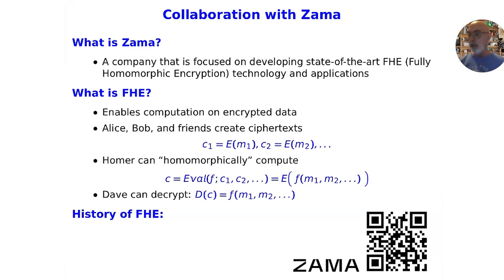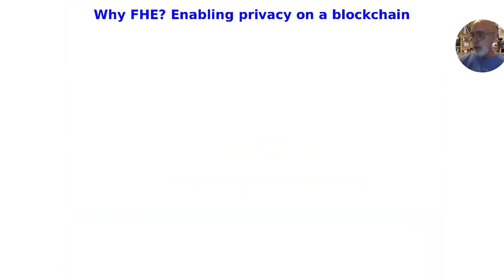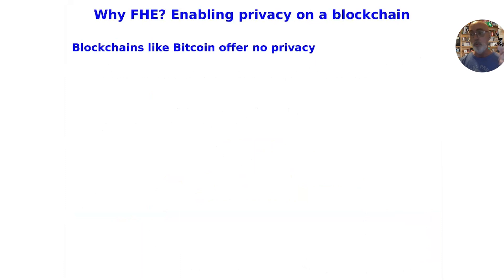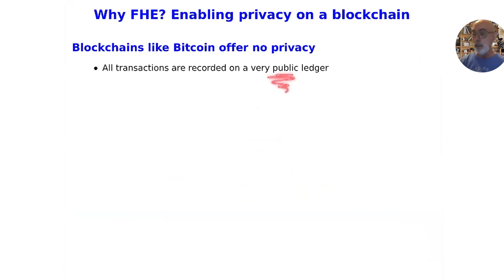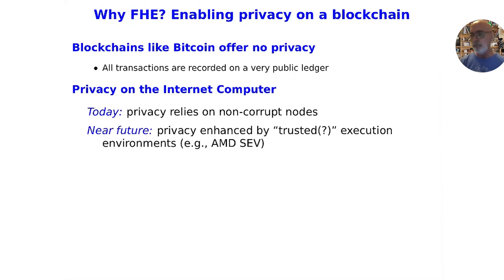FHE has a very long history. It was first proposed in 1978, with a first solution in 2008, and there's been a lot of progress since then. Before joining DFINITY, I worked at IBM on an FHE project there. So why FHE? As Jan already mentioned, it's one way of enabling privacy on a blockchain. Blockchains like Bitcoin really offer no privacy at all — all the transactions are recorded on a very public ledger. Today, on the Internet Computer, privacy essentially relies on nodes behaving in a non-corrupt way. In the near future, we want to improve the situation by enhancing our nodes with trusted execution environments like AMD SEV.